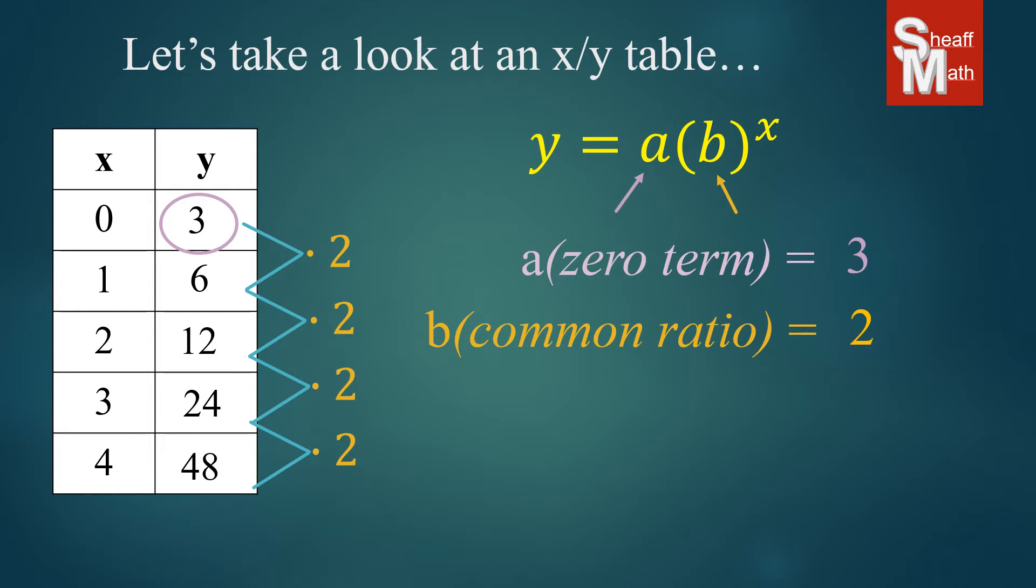Since we have both of our numbers, we put our three in for the a, and our two in for the b. And we have our exponential equation. Not too bad.